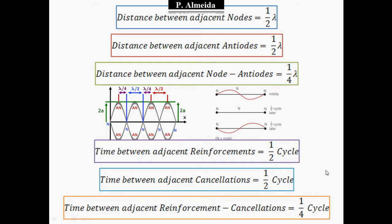The time between adjacent reinforcements and cancellations is going to be one-fourth of a cycle, because a full cycle is a full wavelength. Standing waves move sometimes up, then there's a time where it's all at zero, and then down. This picture shows the same wave one quarter of a cycle after the first picture and one half of the cycle after the first picture.